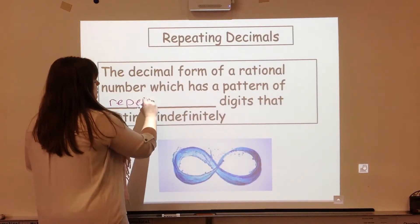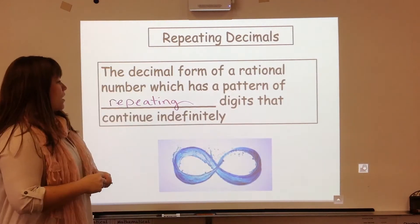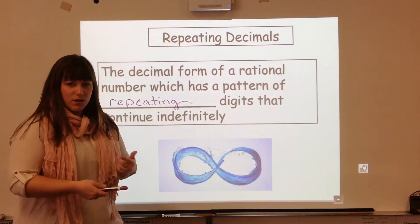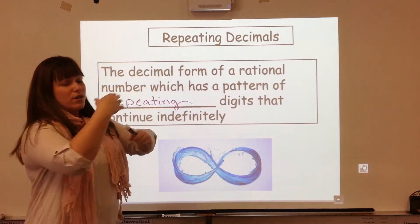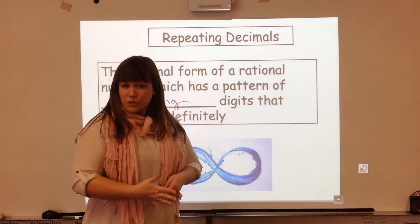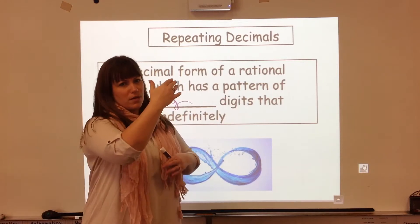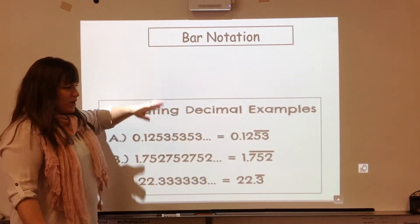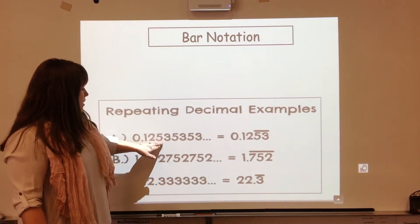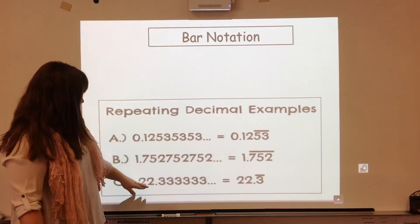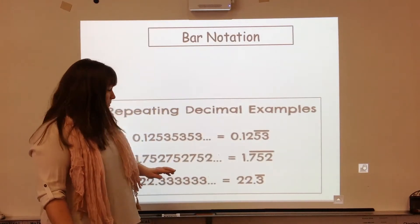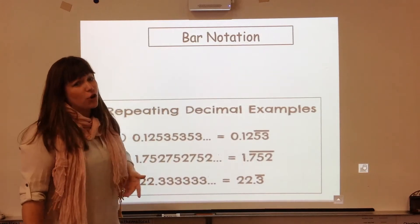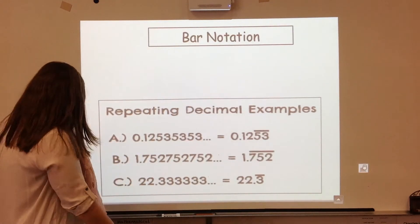Repeating digits that continue on indefinitely. That's why I have this infinity symbol. It can go and continue on and on just like those zeros, but they won't always be zeros. There'll be a pattern to it. Before I talk about bar notation, sometimes the repetition is with two numbers, sometimes it's just with one number, and sometimes there's more than two numbers.